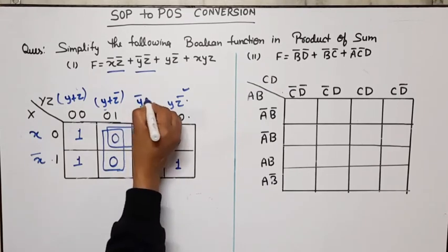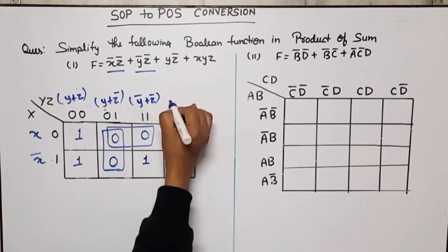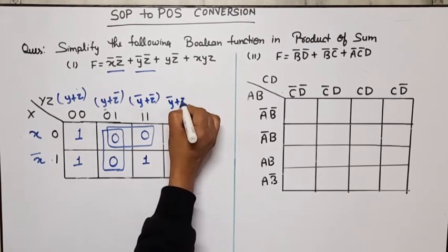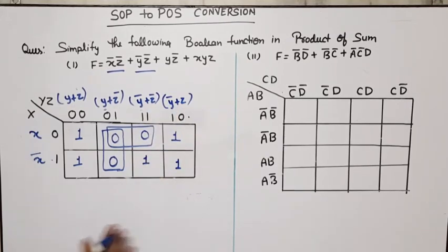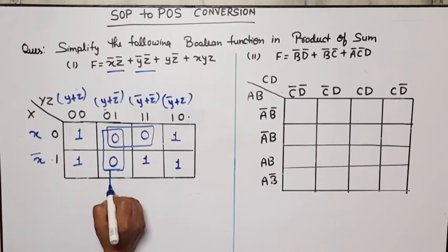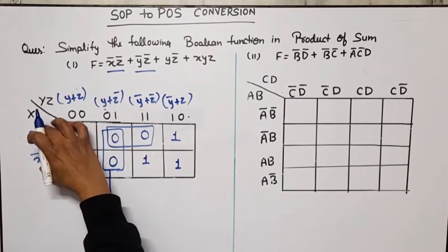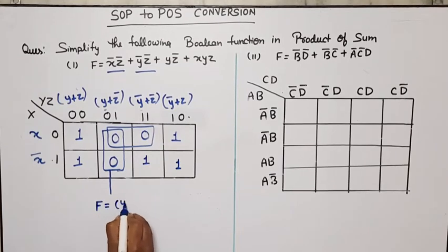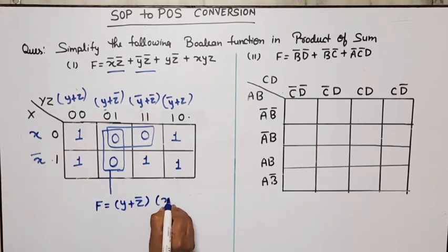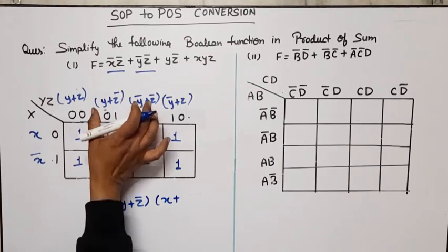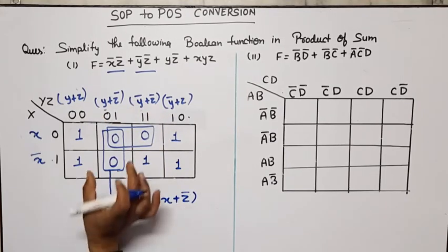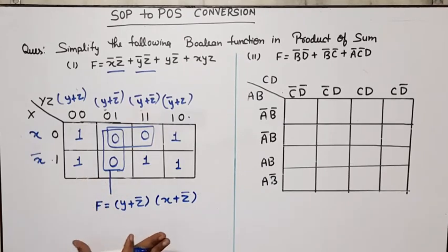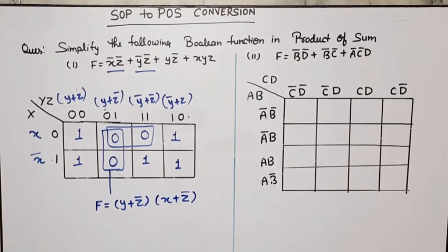For that pair: y is 0 so we write y, z is 1 so we write z̄, giving (y + z̄). For the other pair: both rows are used so x̄ and x cancel, leaving only the column contribution z̄. The final simplified POS expression is f = (y + z̄)(z̄), which simplifies to f = (y + z̄)(z̄).